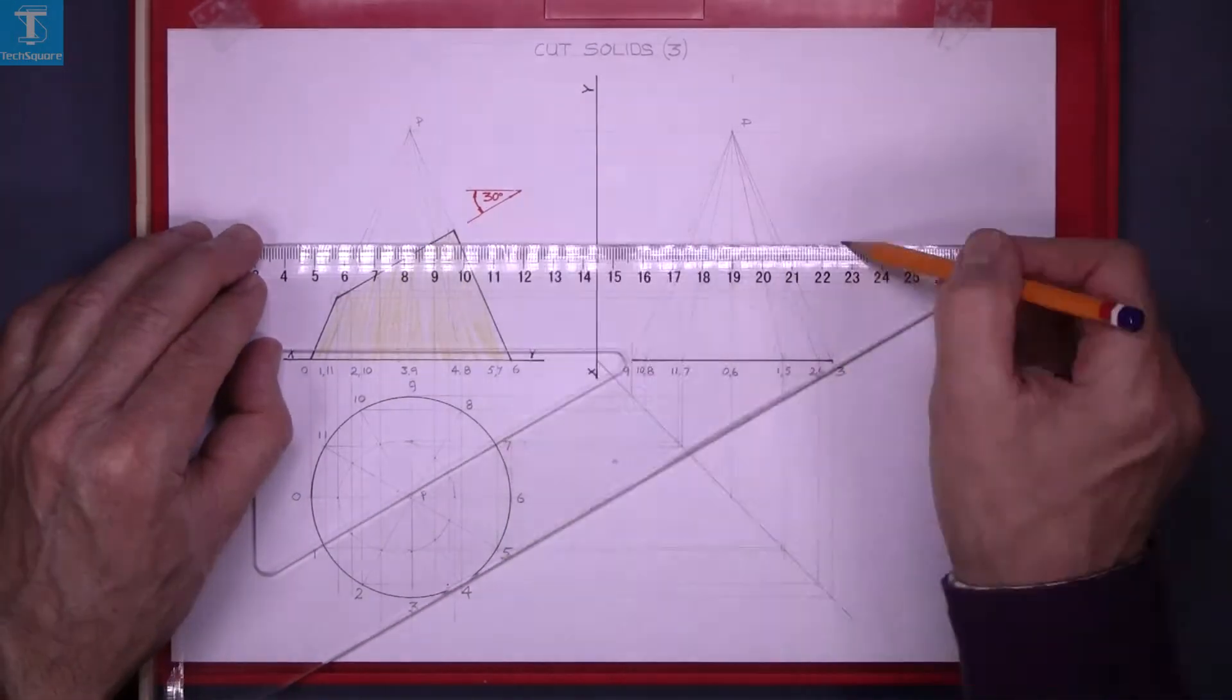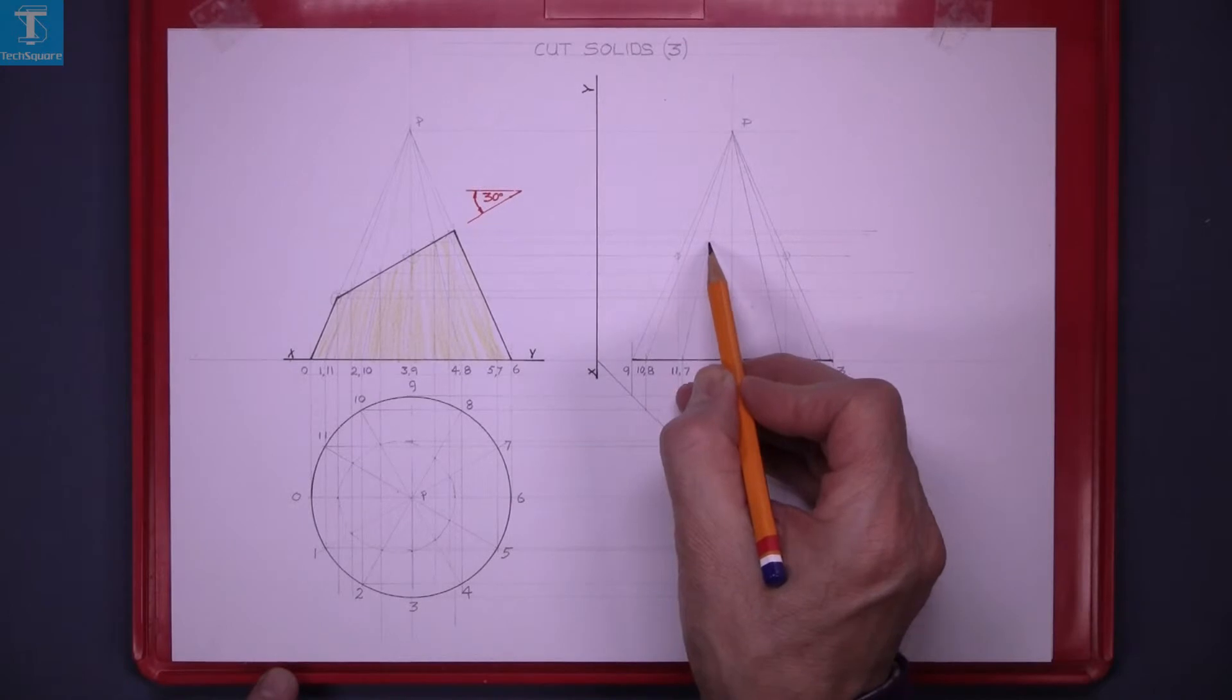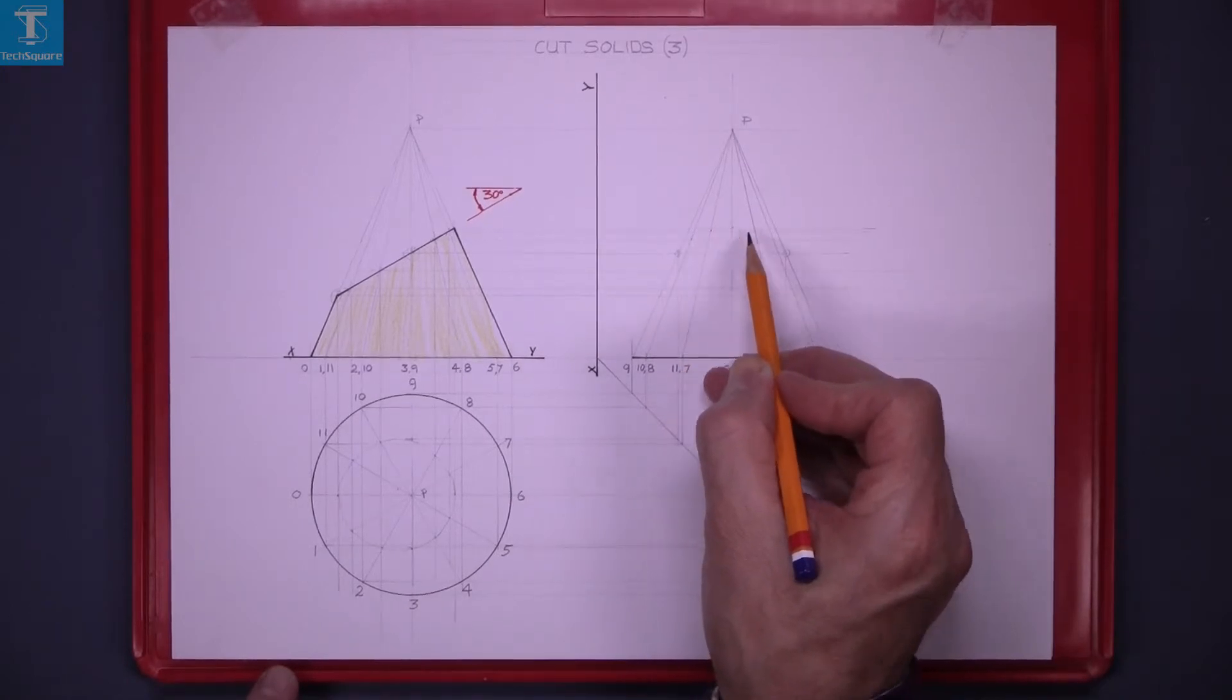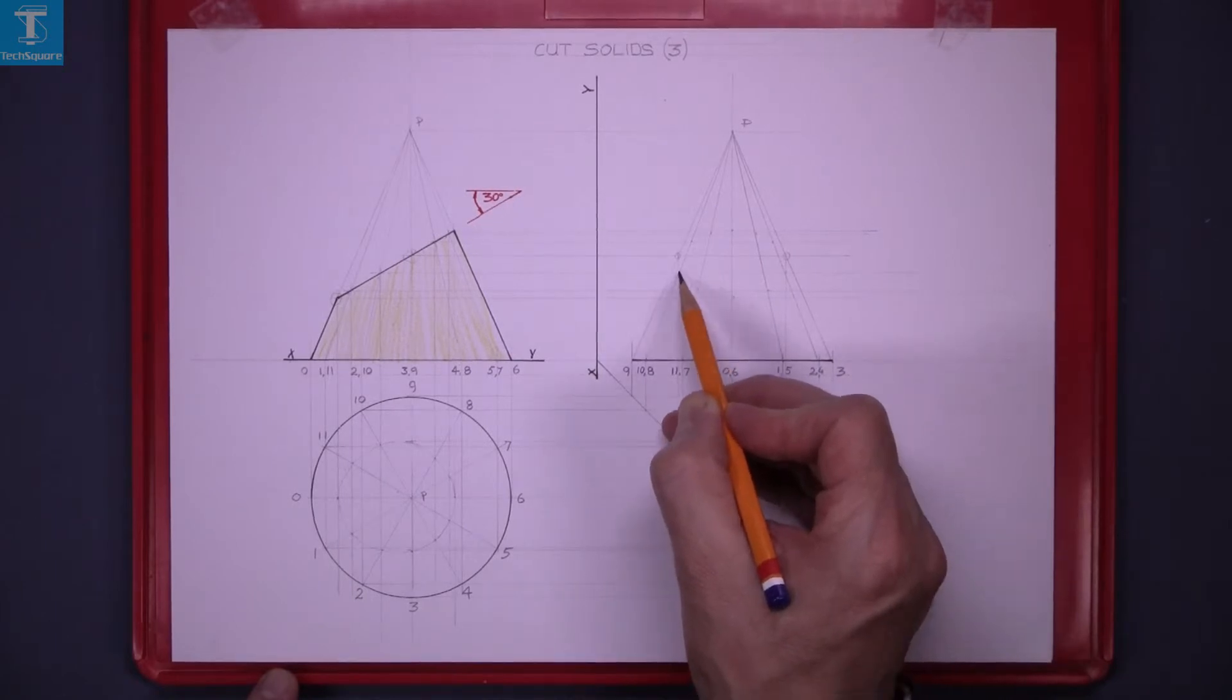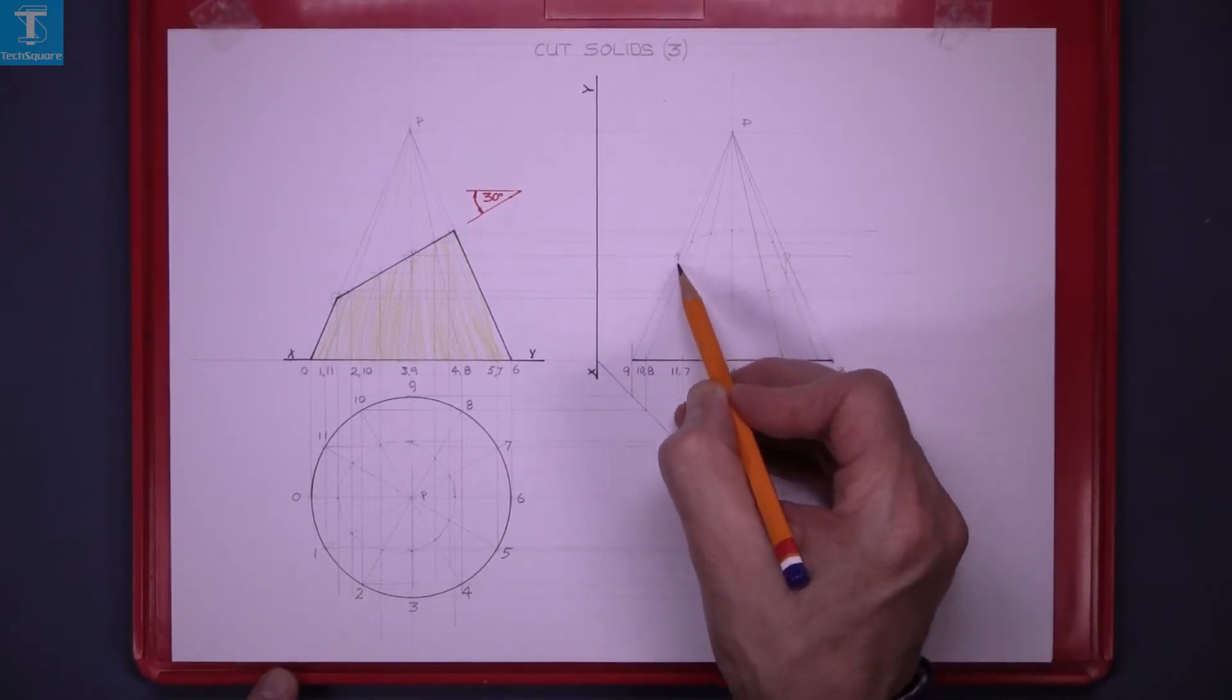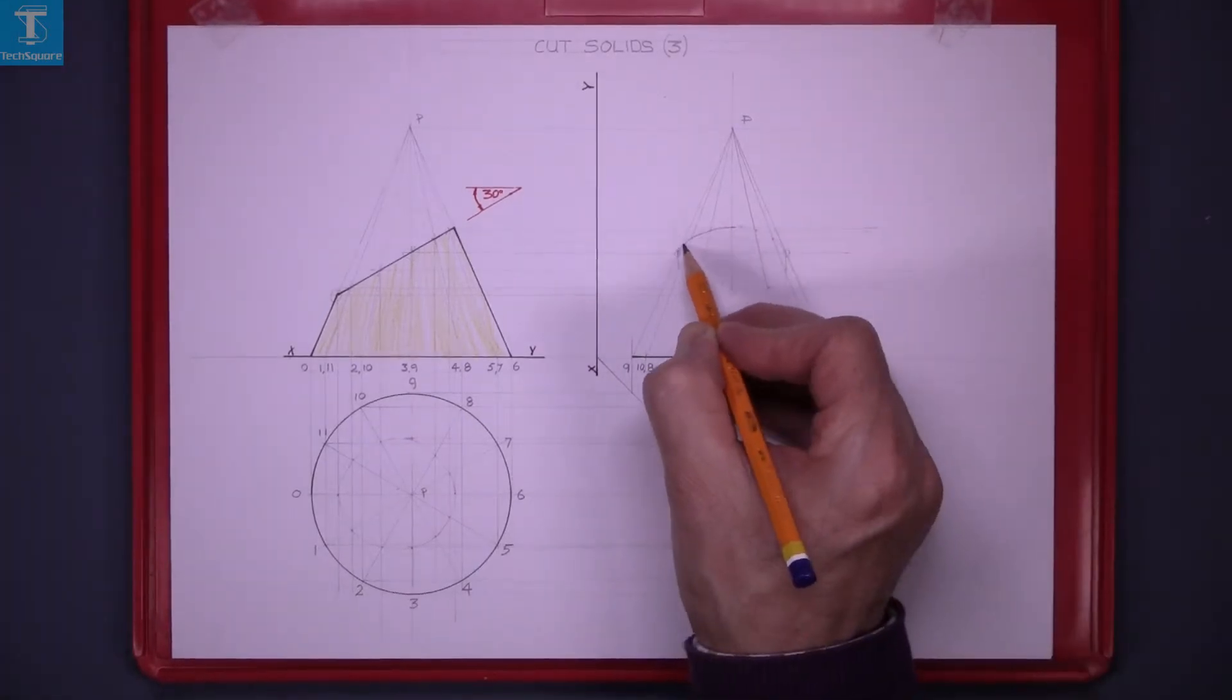Project the points on over to the end view and now locate the points on the cut in the end view. And now a freehand curve through those and that's the end view complete.